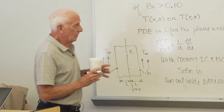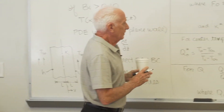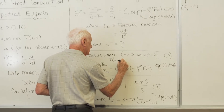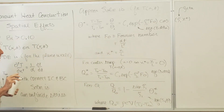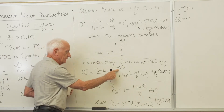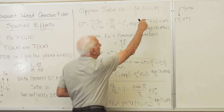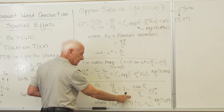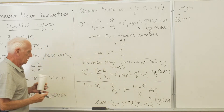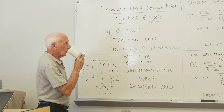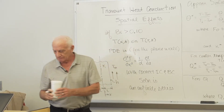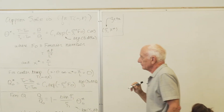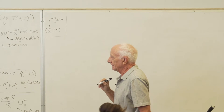So you've got three equations: one gives you the temperature at any X for any time (eq. 5.43A), one gives you the centerline temperature (eq. 5.43B), and one gives you how much energy has been transferred from time zero to time T (eq. 5.54) — all for a plane wall geometry.